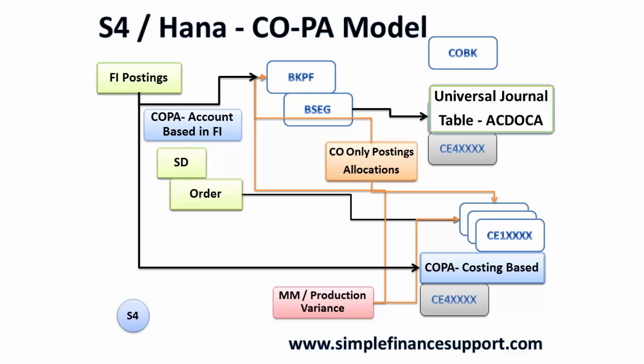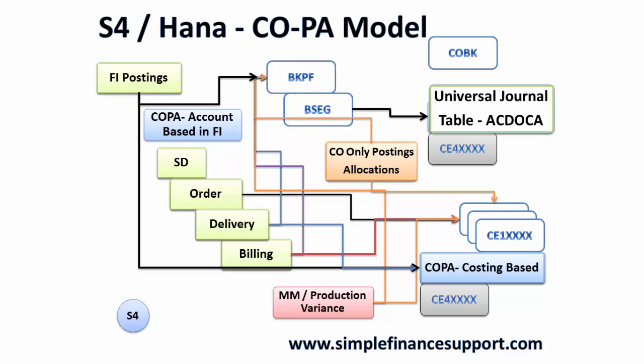There is a concept of predictive journals and statistical journals that may be posted, but at this point order data goes to costing-based COPA. Delivery information automatically flows into the universal journal ACDOCA for COPA account-based, and then into costing-based if enabled. Billing information goes to the universal journal and then to COPA costing-based analysis. So this is how the data flows in S/4 HANA, where COPA account-based information is effectively embedded in the universal journal.